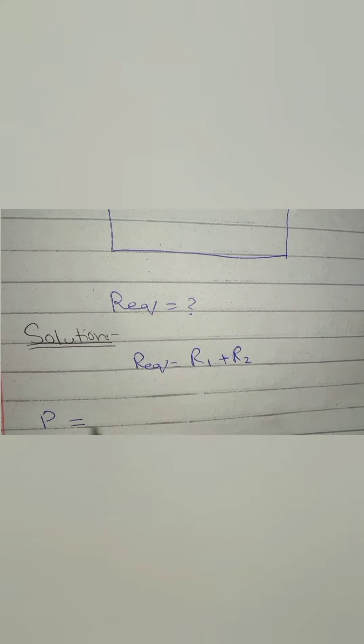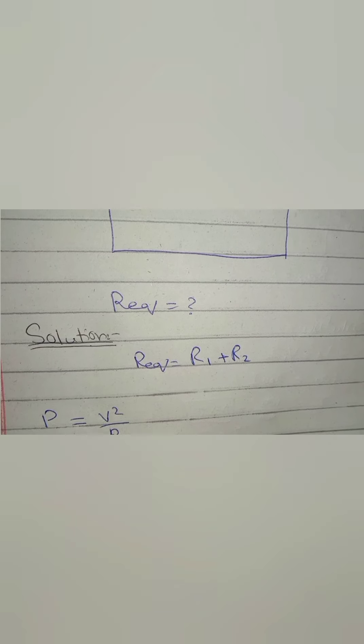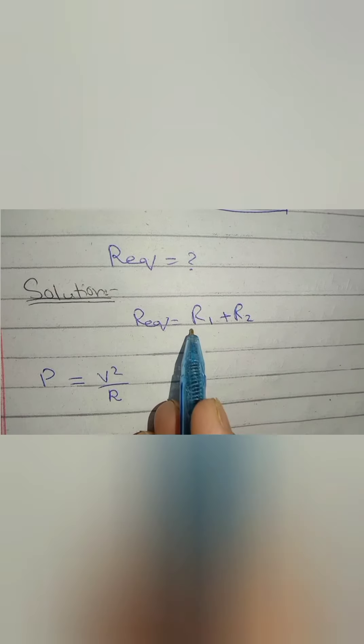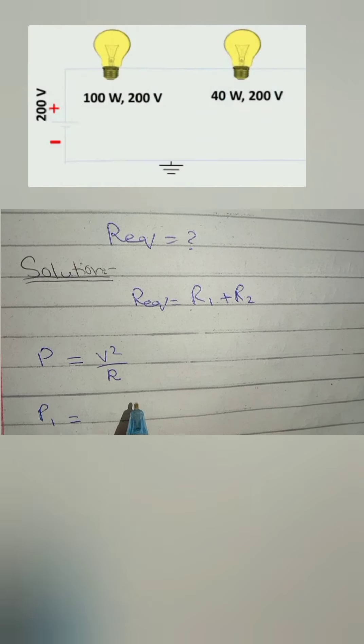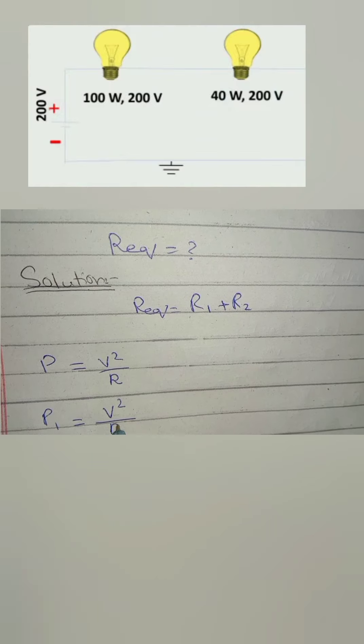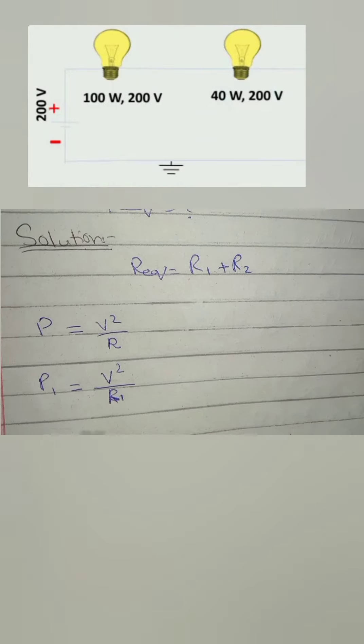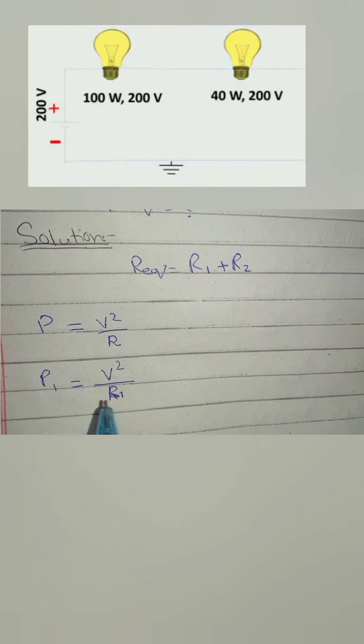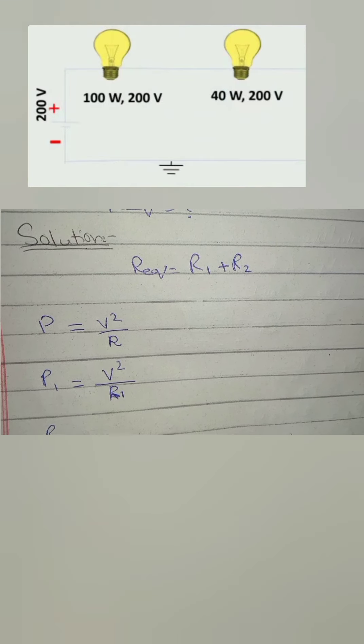By using the power formula P equals V square over R, we will calculate the resistance of R1 using power P1 and V1. As we now have to calculate R1, we arrange the equation for R1.